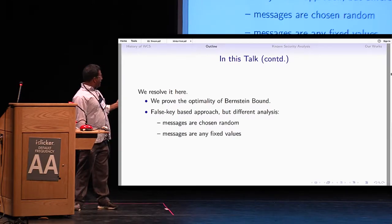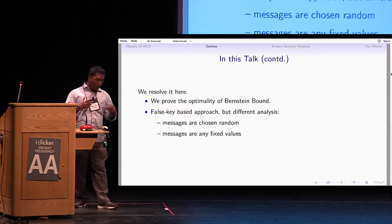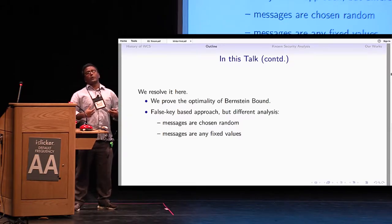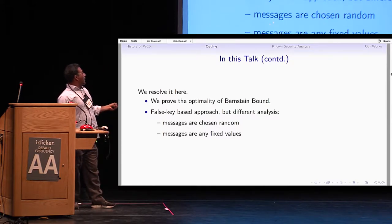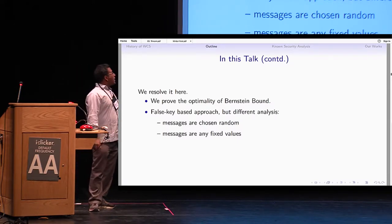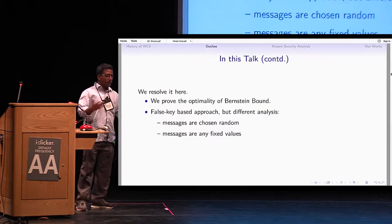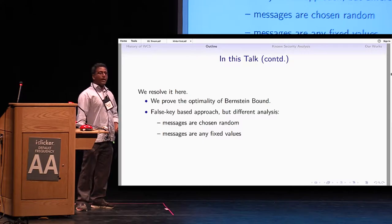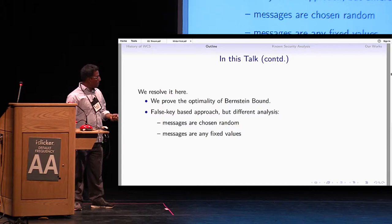They consider the false-key-based approach, which is very nice. I will take that approach again but make appropriate corrections. We prove tightness of the Bernstein bound in two scenarios: when messages are chosen randomly, which is easy to analyze, and also when messages are fixed values — even when the adversary has no control over the message choice. The attack still works, but requires more complex analysis.